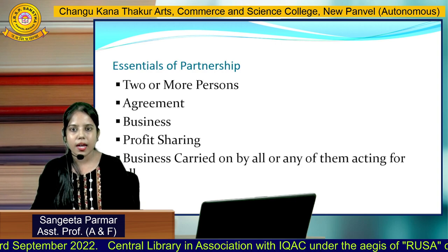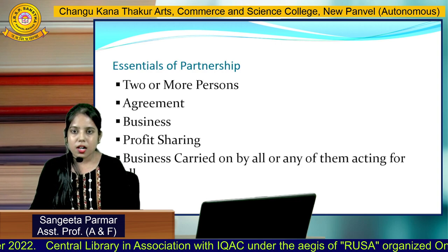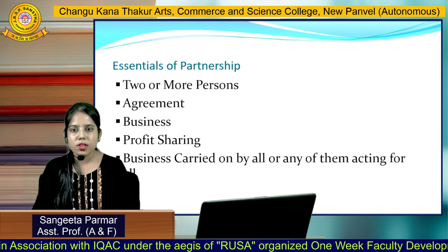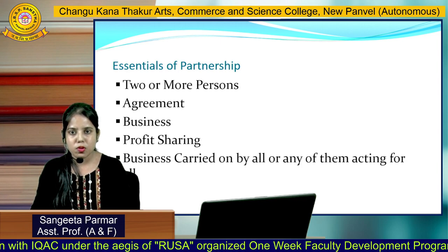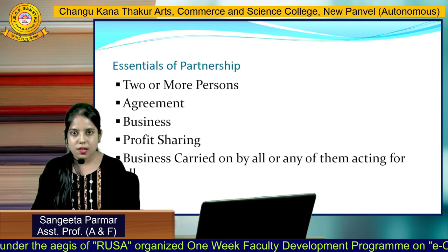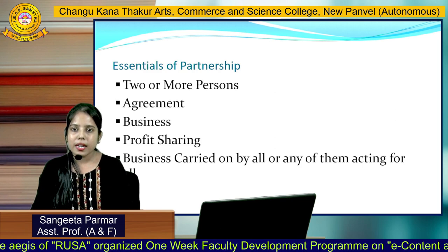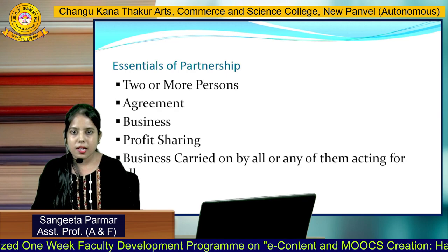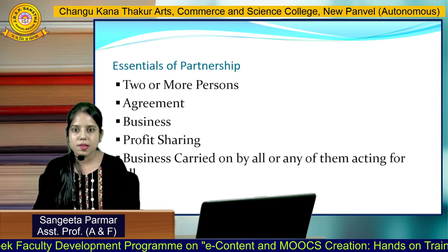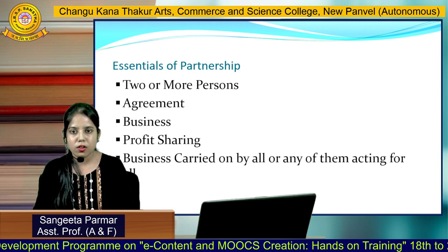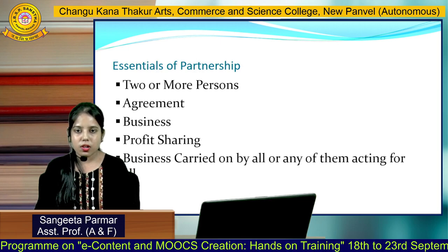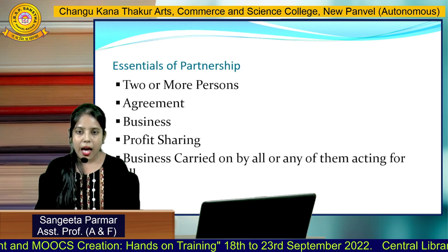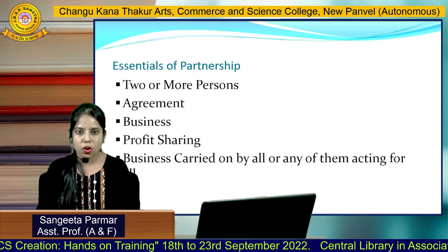The third essential is business. Business is a very essential element of a partnership firm; without business no partnership can be formed. The fourth essential is profit sharing. The main motive behind starting a business is profit, so the profit will be shared between the partners.